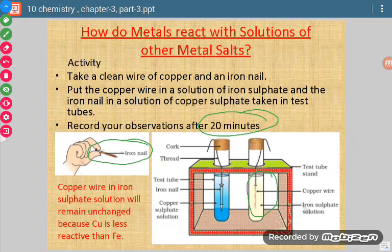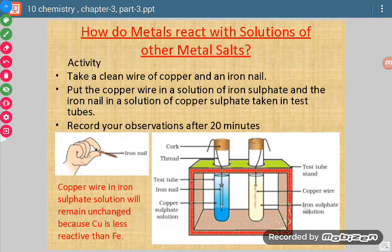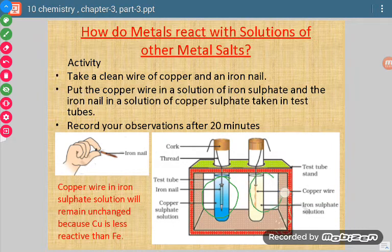But if we take out the copper wire from the iron sulphate solution after about 20 minutes, it will be as it is — there will be no change. So in some cases there is change and in some cases there is no change. This depends on the reactivity of the individual metal. Iron metal is more reactive than copper, so it is able to replace copper from its solution. But copper is less reactive than iron, so it cannot replace iron from its solution.